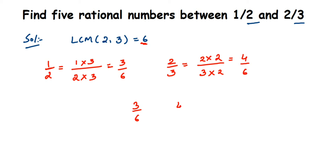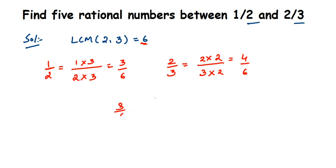However, looking at 3/6 and 4/6, we don't have many numbers in between. Between the numerators 3 and 4, there are no whole numbers in between. So we need to find further equivalent rational numbers of 3/6 and 4/6 to get sufficient numbers between them.